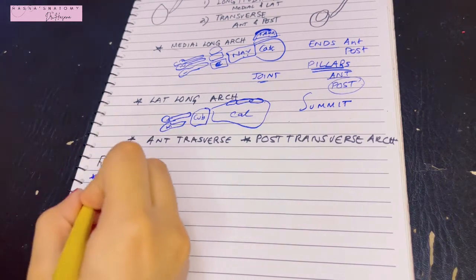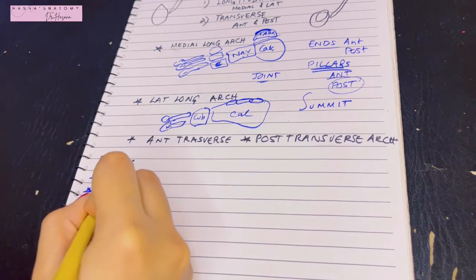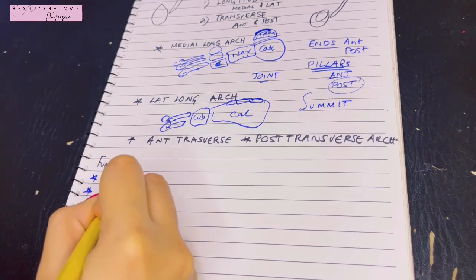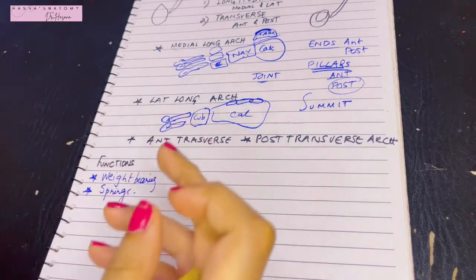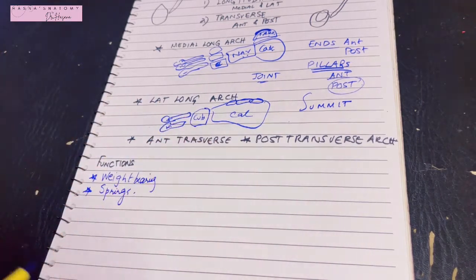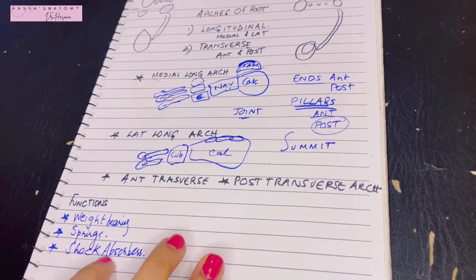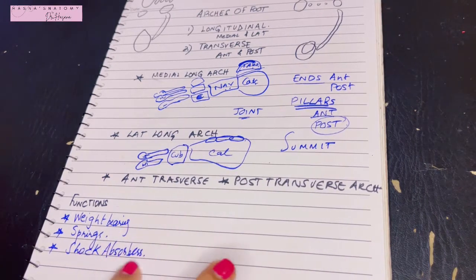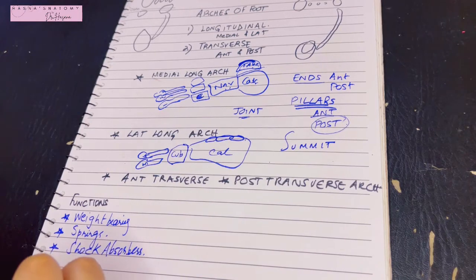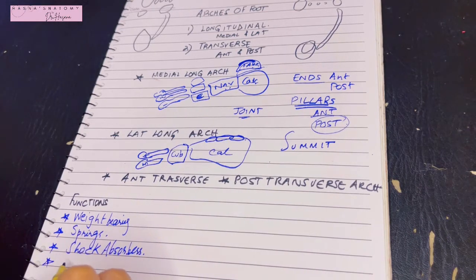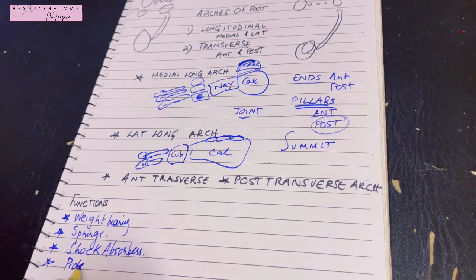The second function is that these arches act as springs, so that a person can walk on uneven ground, run, or walk easily. The third function is that these arches act as shock absorbers when you jump or run.